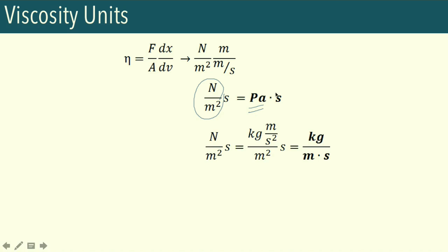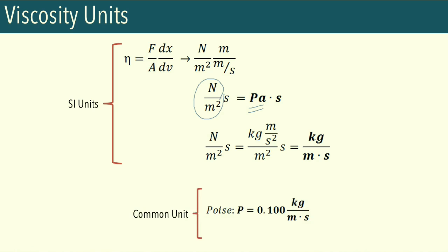Breaking down to basic SI units: the newton equals kilograms times meters per second squared, over meter squared second. This simplifies to kilograms per meter times second. We also have another commonly used unit called the Poise, symbolized P, which is equivalent to 0.1 Pascal·second or 0.1 kilograms per meter·second. Keep these unit conversions in mind.